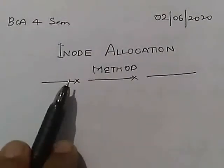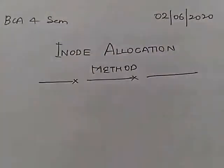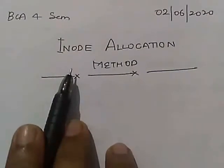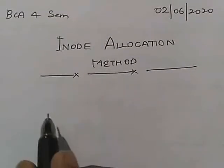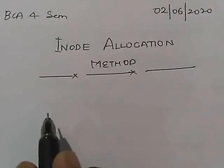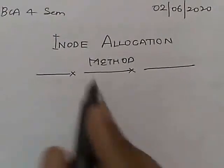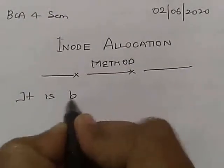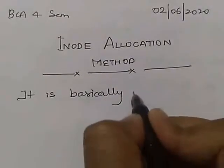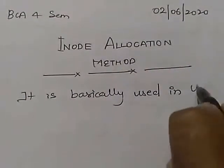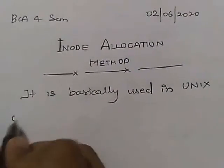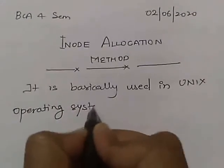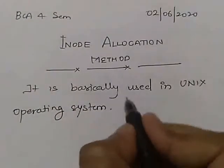Today we will study about the inode allocation method. As we know, we have two types of operating systems: one is command-based and the other is GUI-based. The inode allocation method is basically used in Unix operating system.